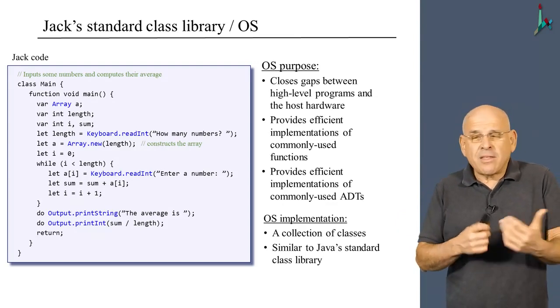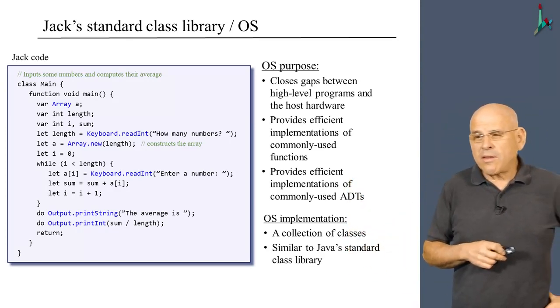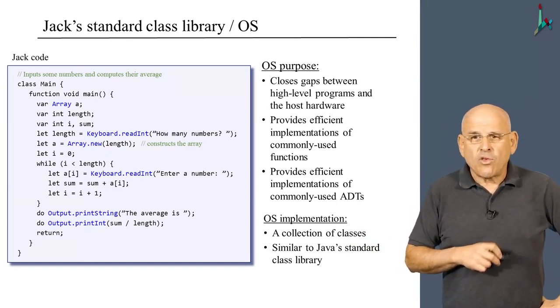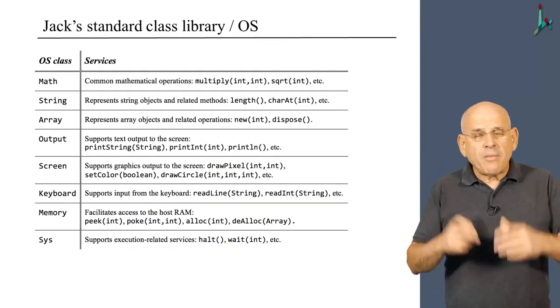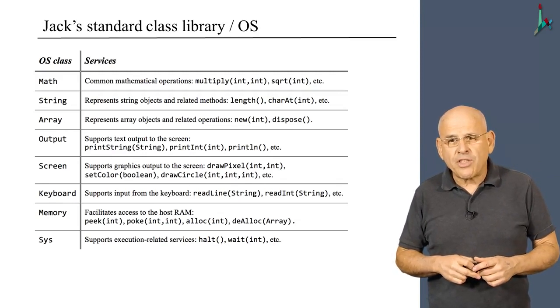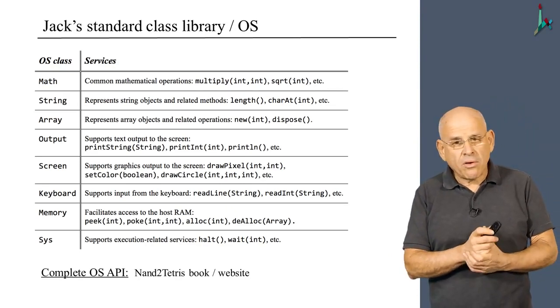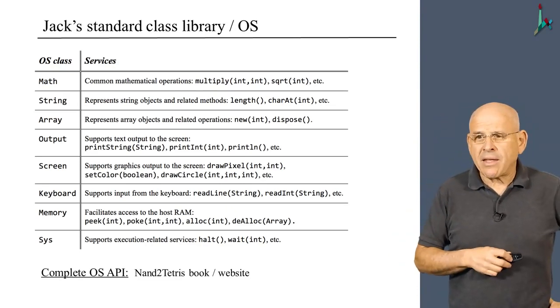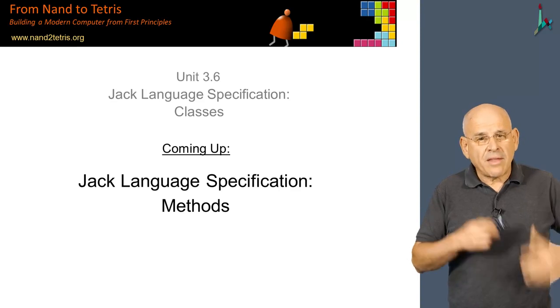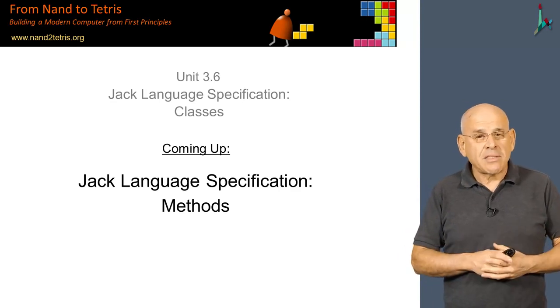But they are similar in the sense that the Jack standard library is wide open, and we can extend it any way we want. And we may do it in some advanced courses if we ever have the energy to build them. So as promised, here is a description of the eight OS classes that support Jack. And if you want to read the complete OS API, you're welcome to look at the NAND2Tetris book and website, and the API is available there. So with that, we are done with this unit. And in the next unit, we'll complete the specification of the Jack language when we discuss methods.